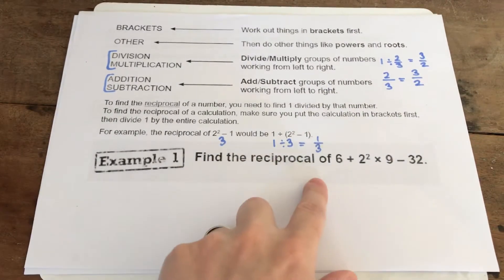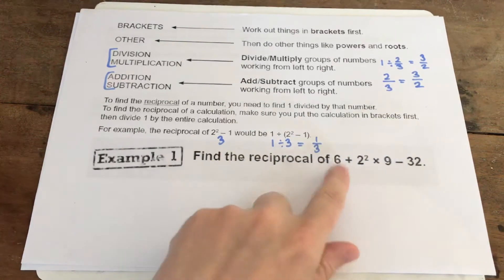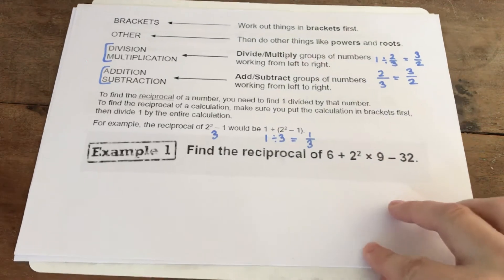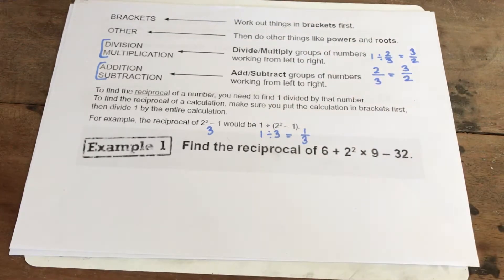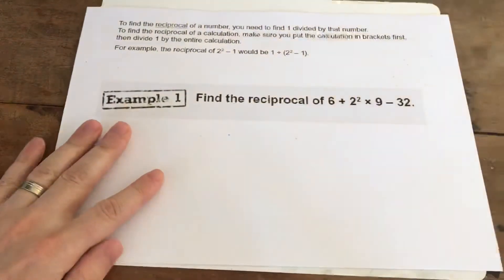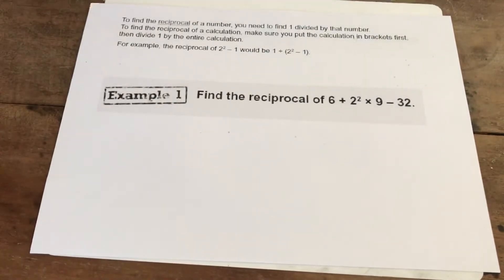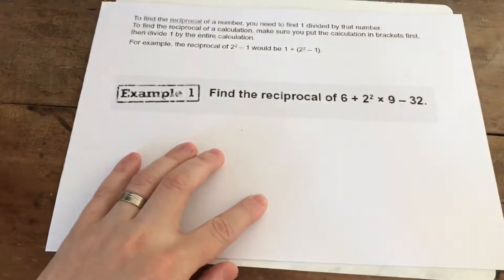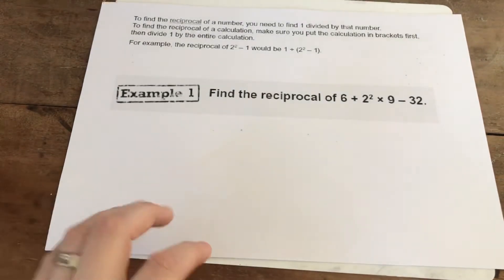I'm going to go through this example down here. So it says find the reciprocal of 6 plus 2 squared times 9 minus 32. To do this calculation, you need to do BIDMAS. So I'm going to give myself a little bit more space to do that, and I'm going to do it on this sheet of paper here. So if we have a look, we've got 6 plus 2 squared times 9 minus 32. Using BIDMAS, our indices is the first thing that we would do there.